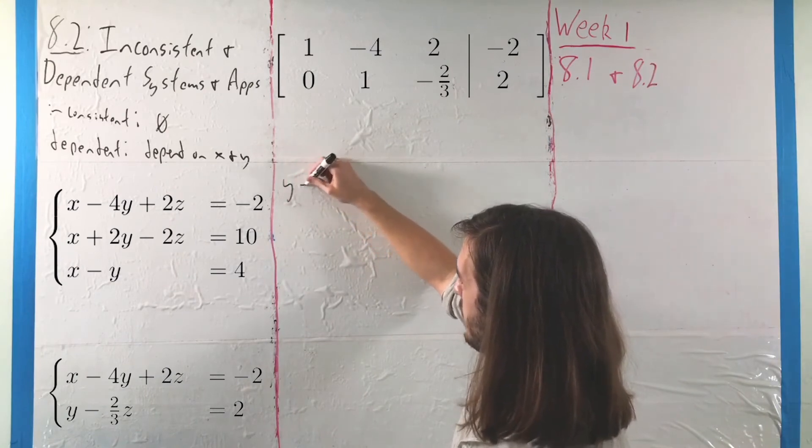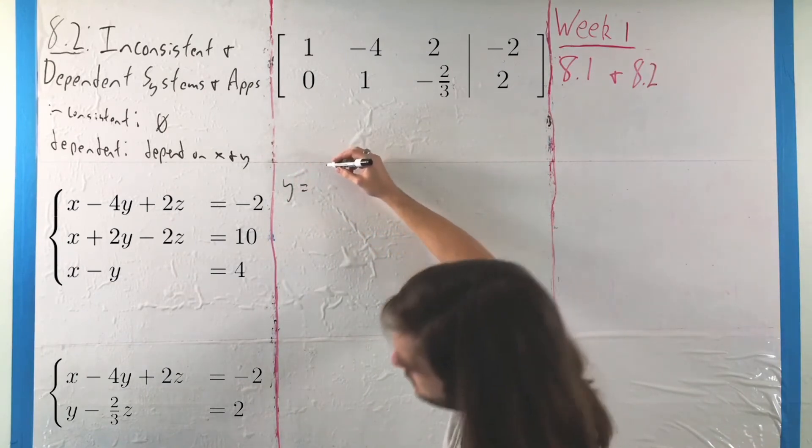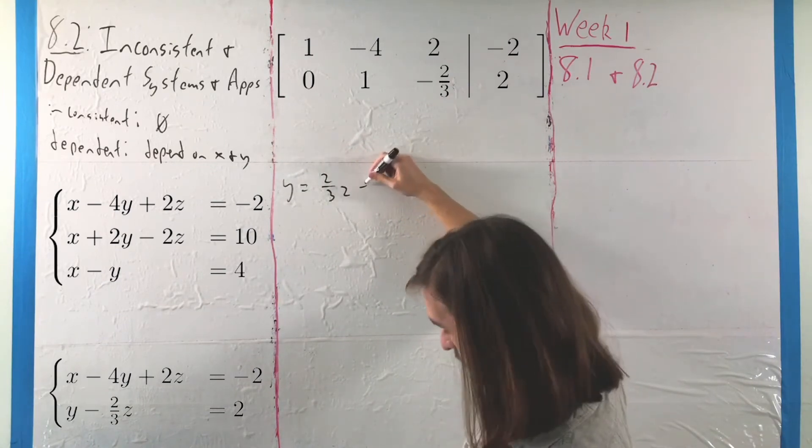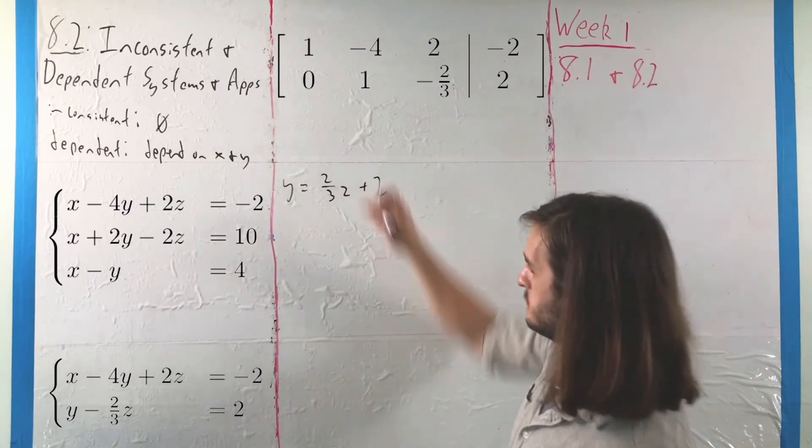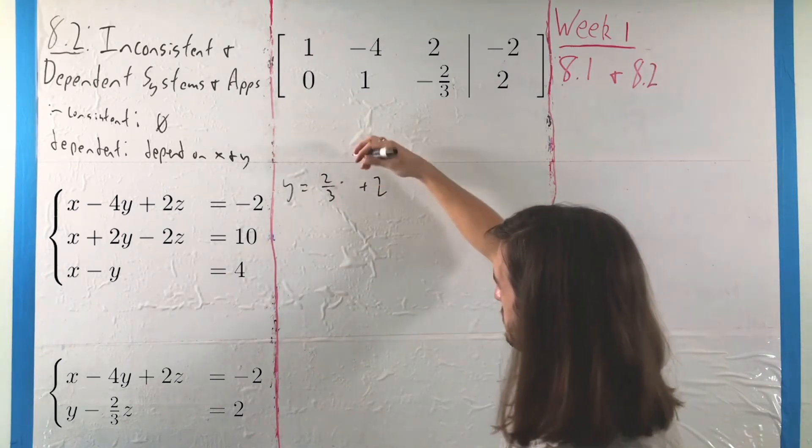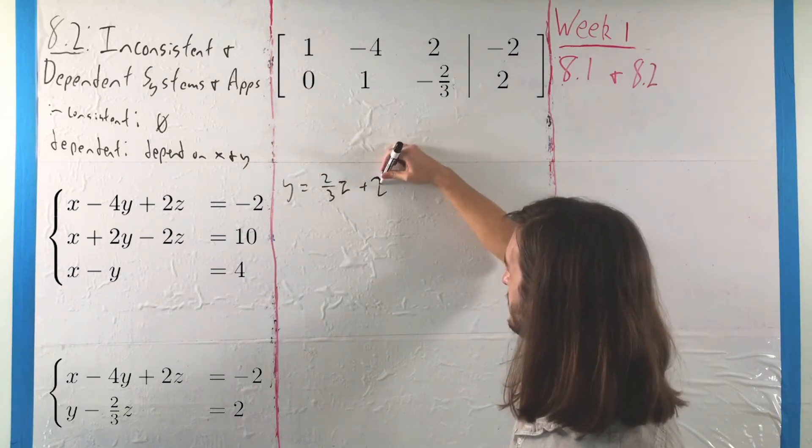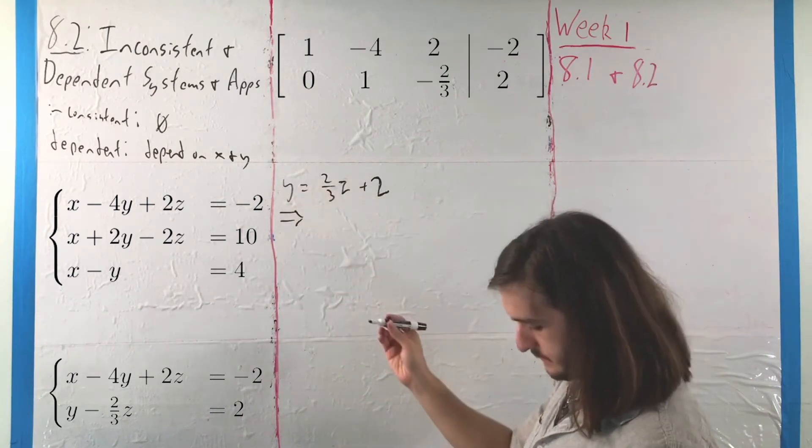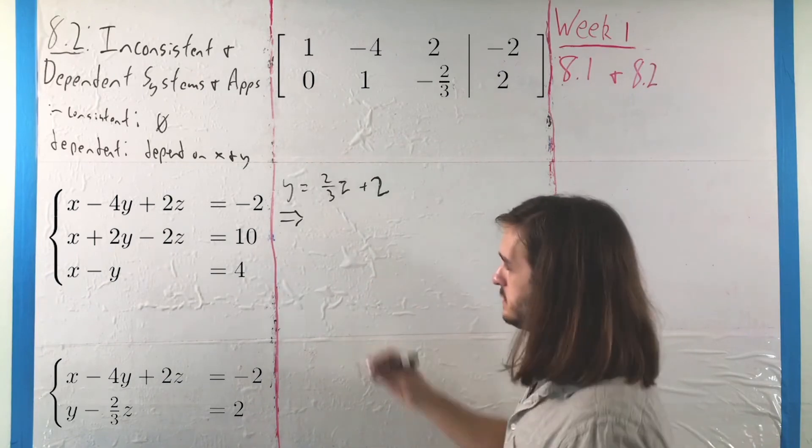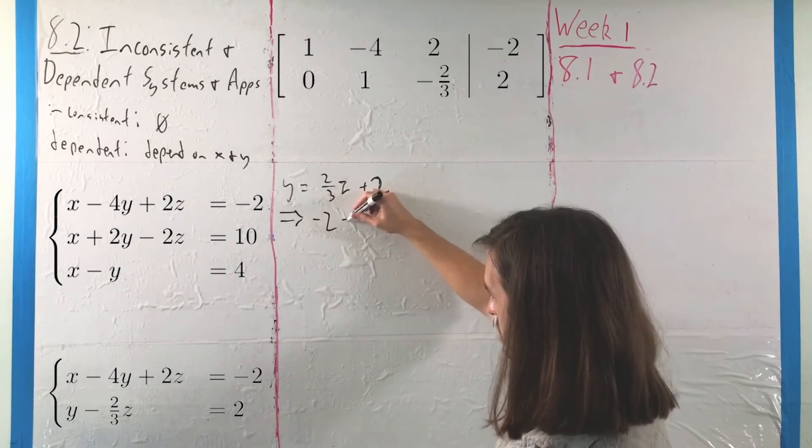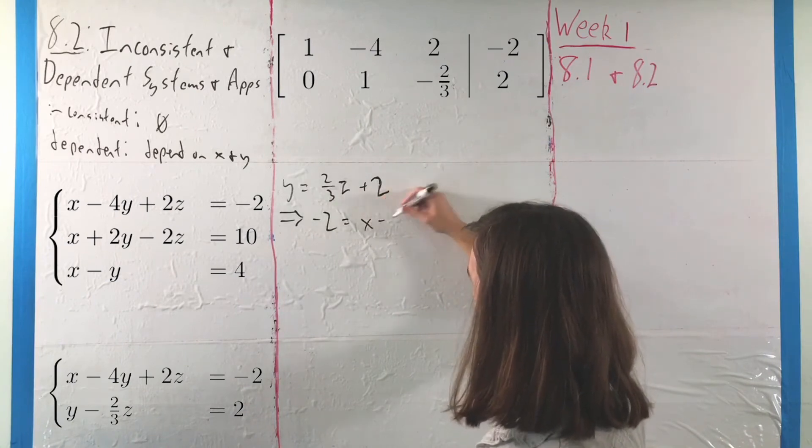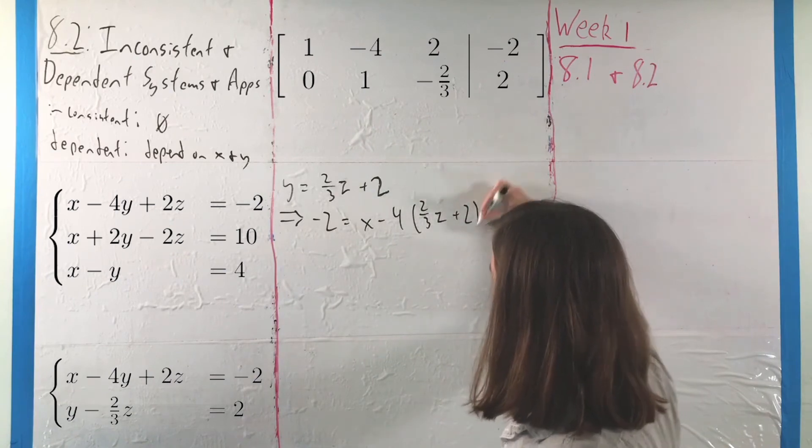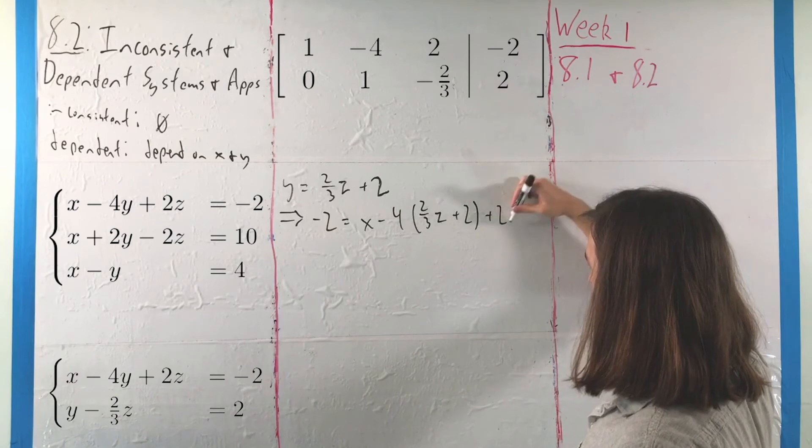And from there we can proceed with some fairly basic algebra, where if we let y be equal to 2 thirds z plus 2. What we can then do from there is take that value and plug it back into the x equation. So we have negative 2 is equal to x minus 4 times 2 thirds z plus 2 plus 2z.